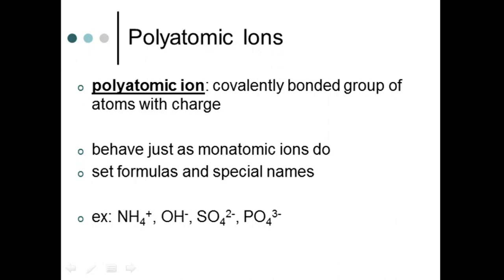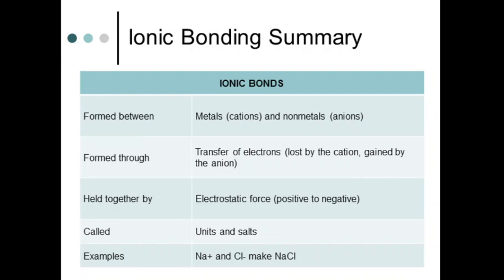To summarize: ionic bonds are always going to form between cations and anions — substances that lose their electrons, which are metals, and substances that gain electrons, which are non-metals. When the metal, or cation, loses its valence electrons to become positively charged, those electrons go to the non-metal, or anion. This transfer of electrons is the really key part in our definition of an ionic bond.